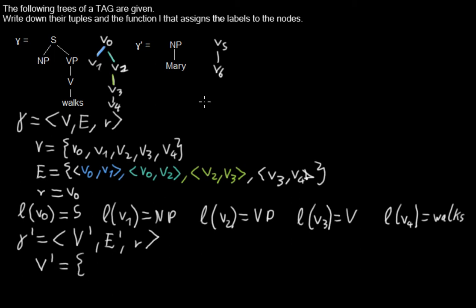So V bar is a set of the two nodes we have here, so it's V5 and V6. And we have the edges. In this case we have only one edge here from V5 to V6. And we have the root node. In this case it's V5.